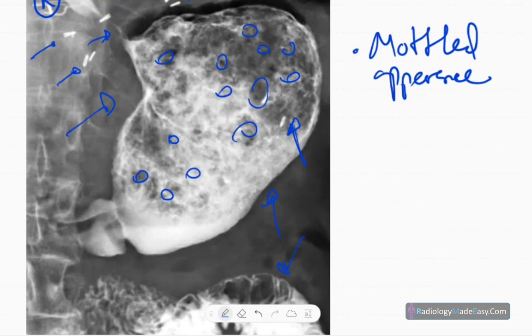Phytobezoar means ingestion of undigested particles or food that retain in the stomach. They are seen in elderly people due to maldigestion of the food particles. There are some other categories like pharmacobezoar and lactobezoar.